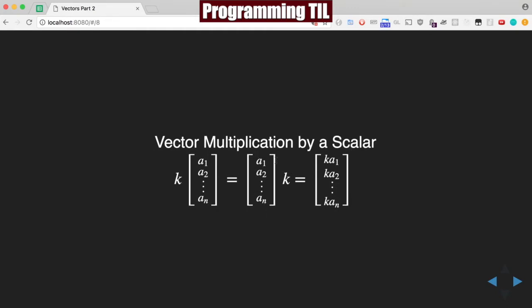Vector multiplication by a scalar can be placed on either side, and the result is the same: k·a_1, k·a_2, ... k·a_n.